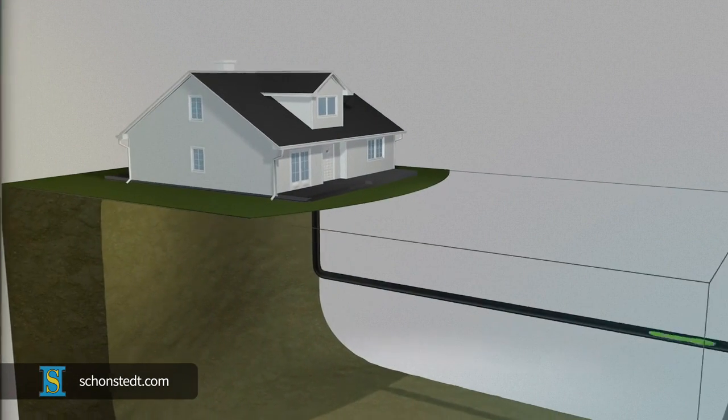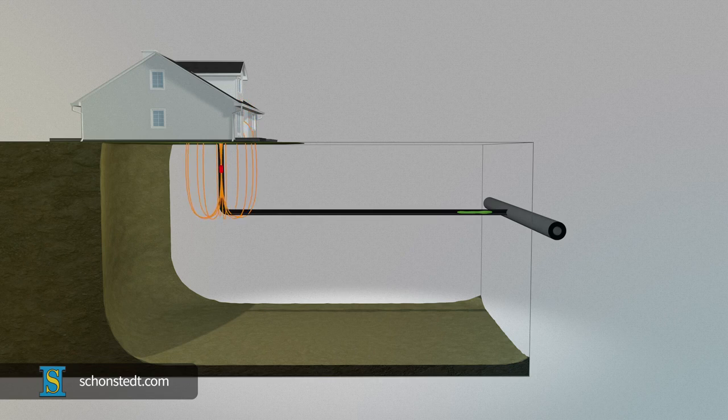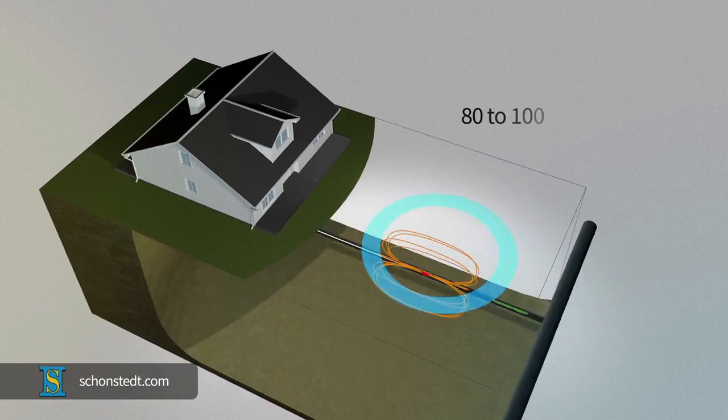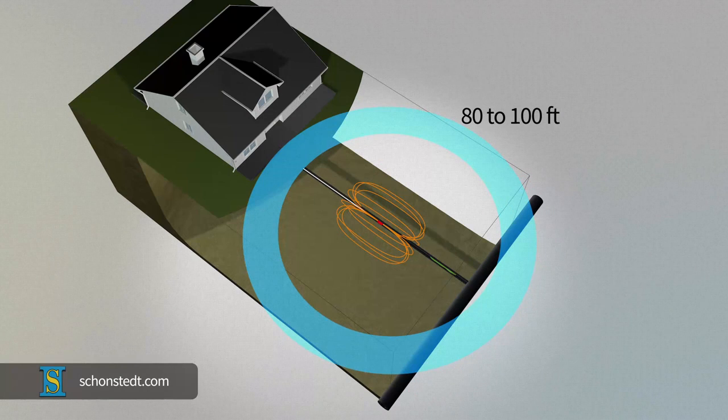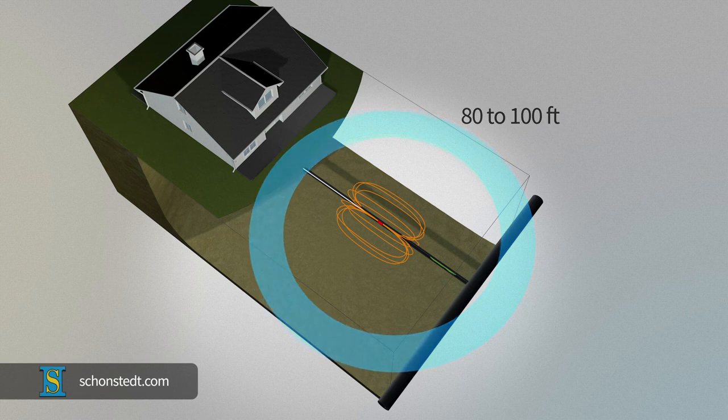Because sondes are small and battery-operated, the signal they emit is limited. In addition, the sonde has to be pushed mechanically into the pipe by an operator. Because of this, sonde locating is usually done within relatively short distances, between 80 to 100 feet or approximately 25 to 30 meters.